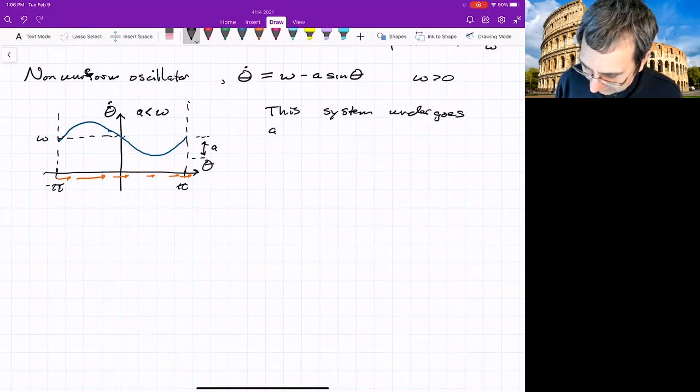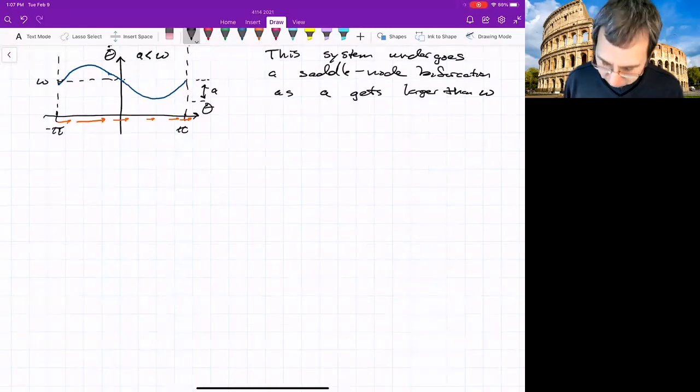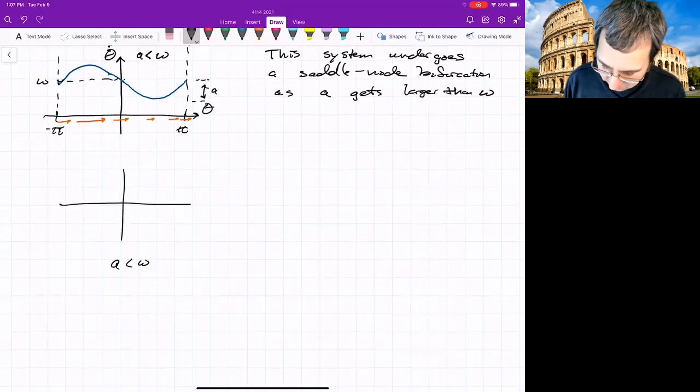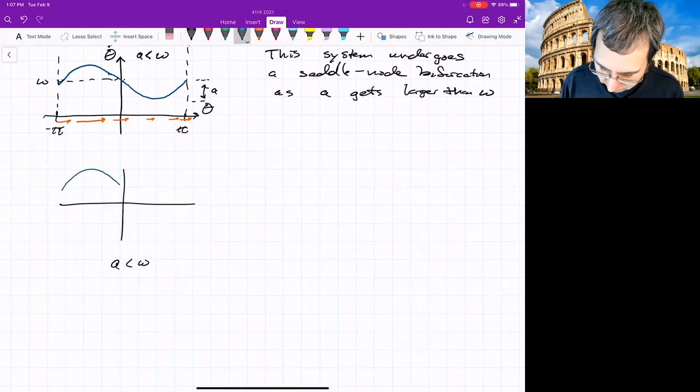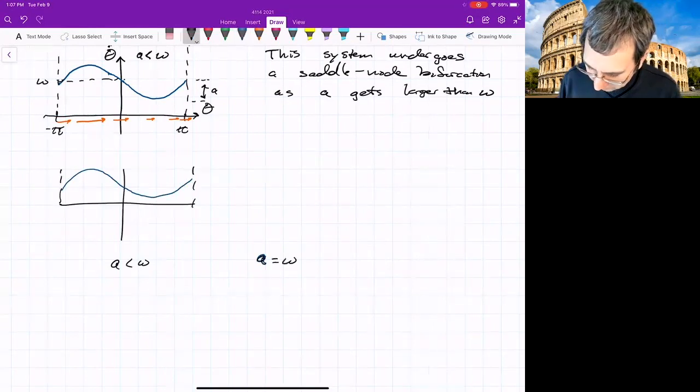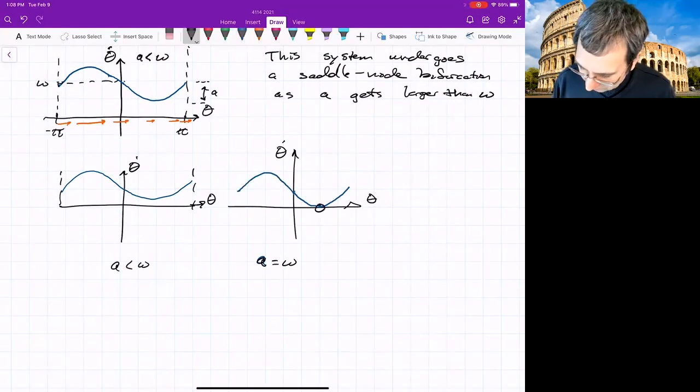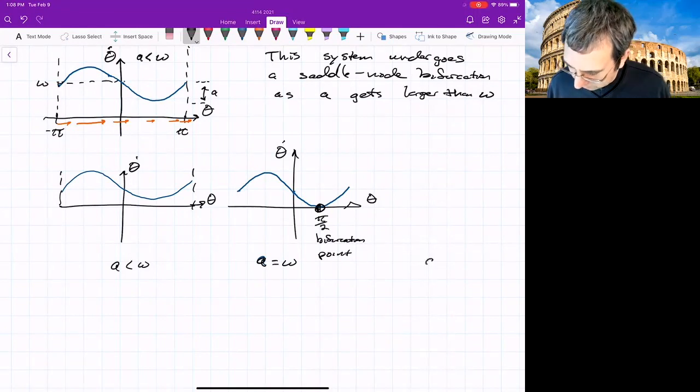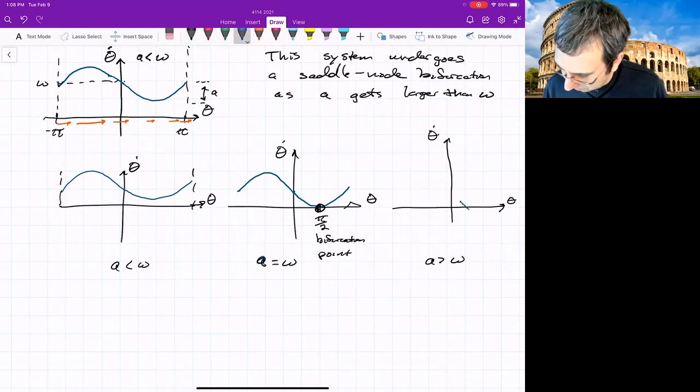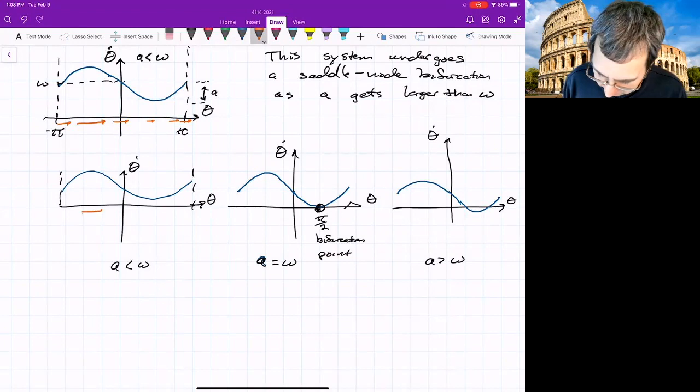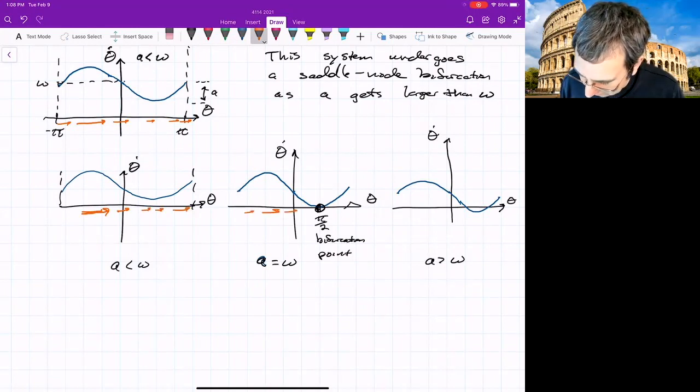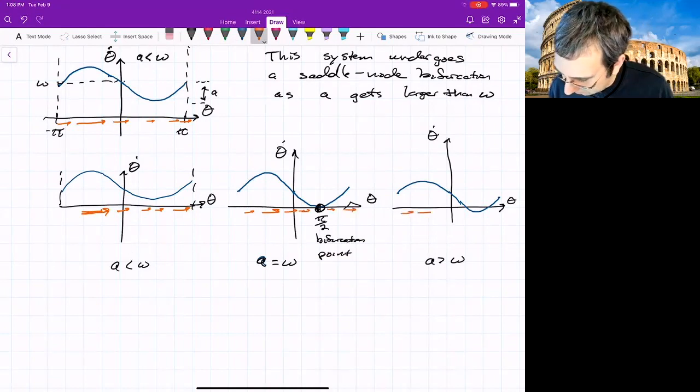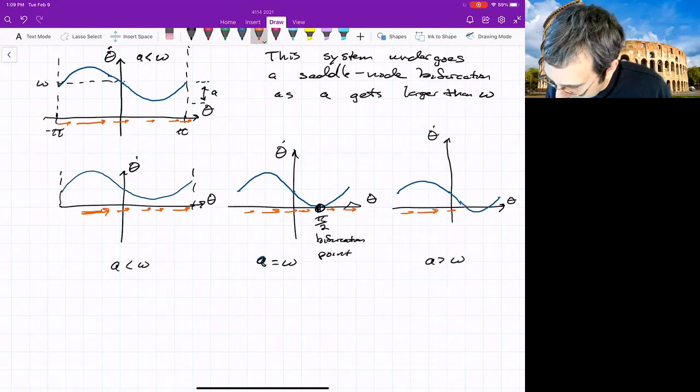The system undergoes a saddle node bifurcation as a gets larger than omega. Let's just look at the different cases. So a less than omega, kind of plotted it here. Let's just do another sketch. I'll do it really close. A equals omega. That means the sine part touches the axis. So we might call this in the terminology of Strogatz. This would be that half stable point. This is the bifurcation point. This is in fact pi over two. The case for a greater than omega. This curve now dips below. Plotting the way things are going. Right here we have things moving really quickly. Then they slow down. They move quickly again, move quickly, and then slow to zero. Then speed up. Here they move quickly, slow down, go to zero. So this is a stable point. Then it reverses direction for a little bit. Then keeps going to the right.